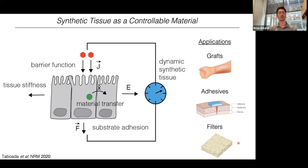Our hope is to develop a graft material where initially you could have low permeability, but at a later time point, in a user-defined manner, you can change the permeability of the tissue on demand to allow it to match the surrounding tissue. That would allow the graft to incorporate better into the patient.